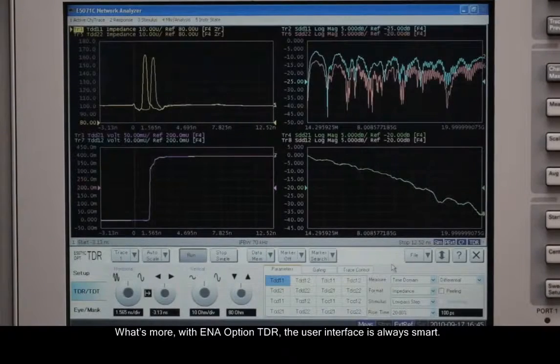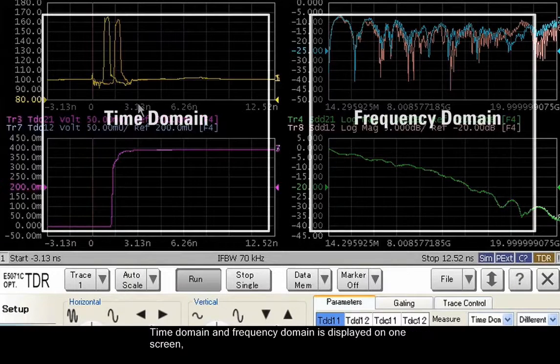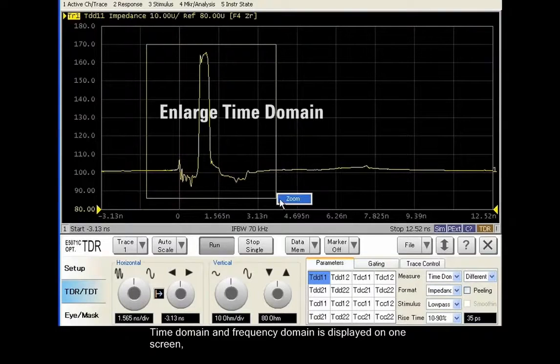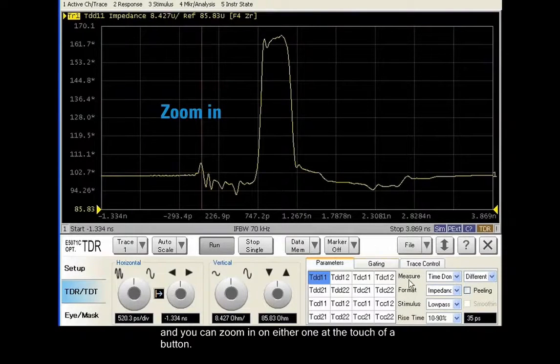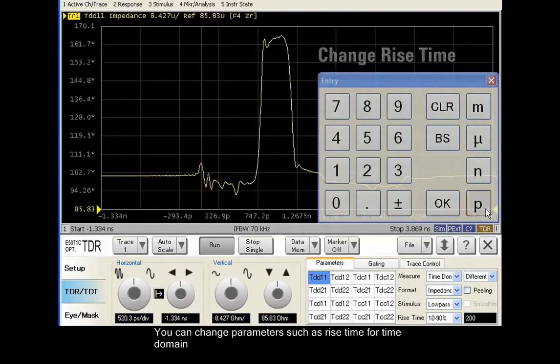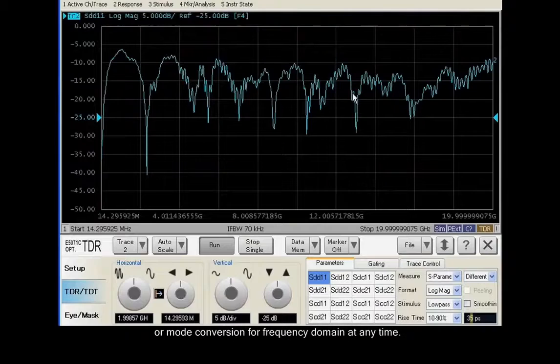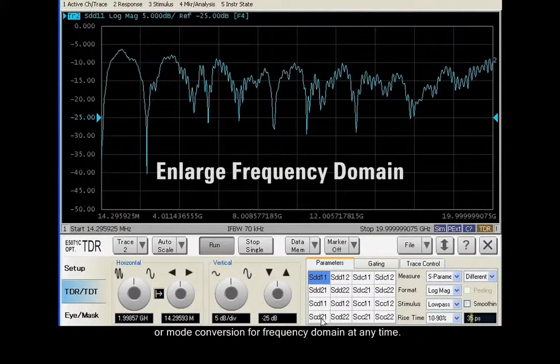What's more, with ENA Option TDR, the user interface is always smart. Time domain and frequency domain is displayed on one screen, and you can zoom in on either one at the touch of a button. You can change parameters such as rise time for time domain or mode conversion for frequency domain at any time.